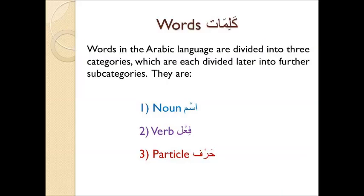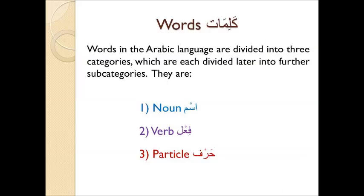Kalimat. Words in the Arabic language are divided into three categories, which are each divided later into further subcategories. They are: one, the ism, the noun; two, fi'al, verb; and three, harf, particle.